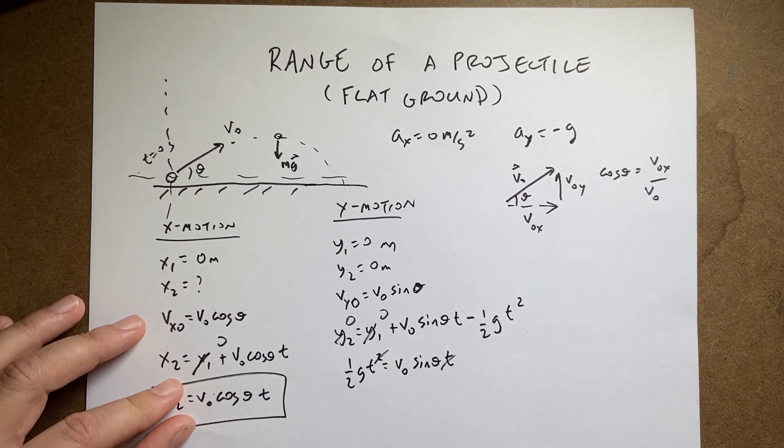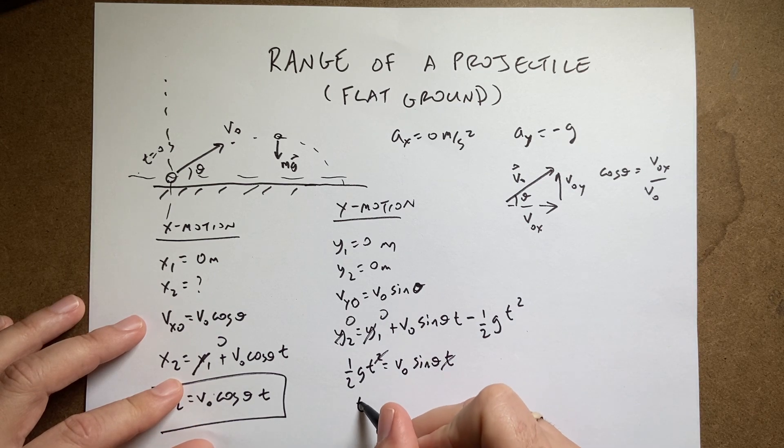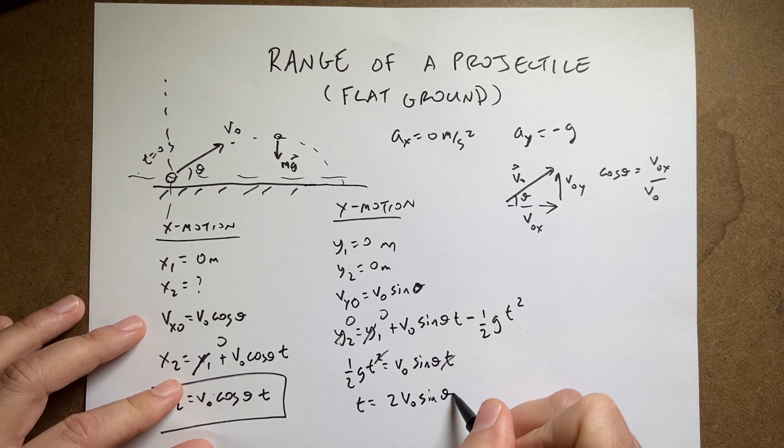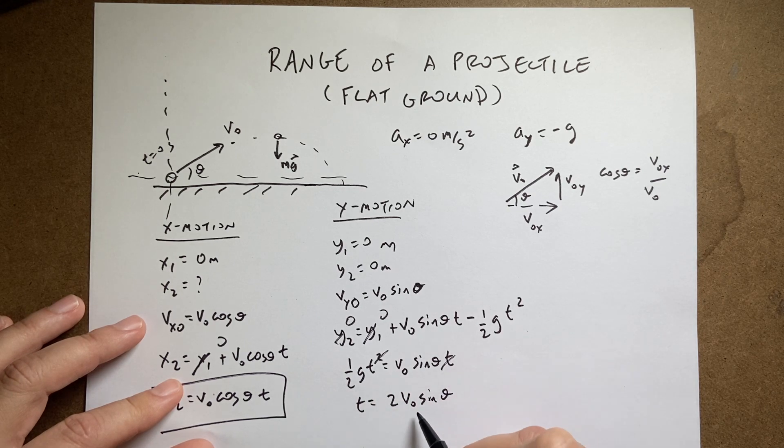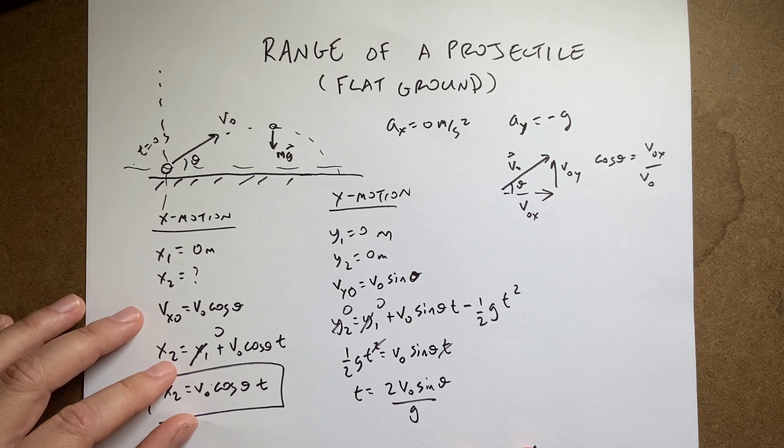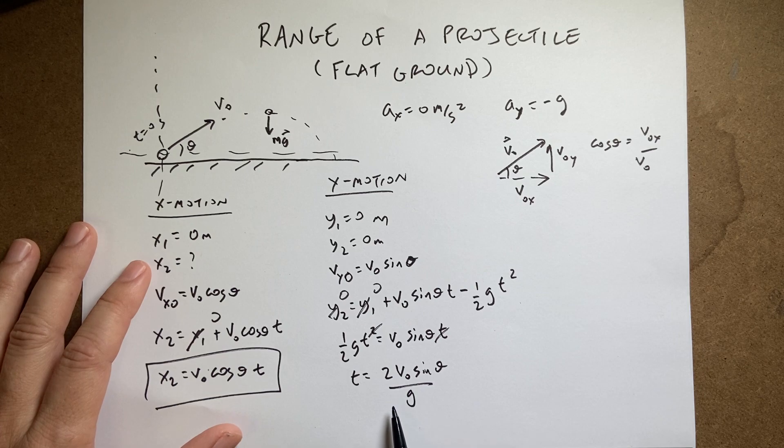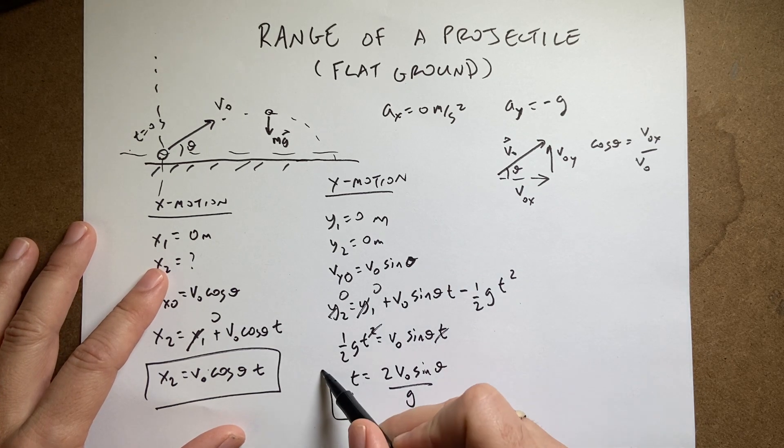This t cancels that one. And I can solve for t. I get t equals two v0 sine theta over g. And notice it's positive time because we don't want to have negative time. That would be really weird. And we do get a positive time. So now I can plug this in up here.